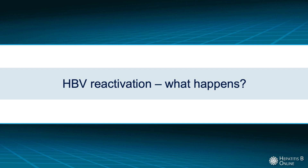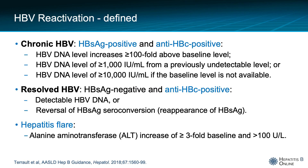So what happens in HPV reactivation? For this portion of the talk, I will be referring to hepatitis B serologic markers. Please review the mini-lecture on this topic on our HepB online site or our YouTube channel. HPV reactivation occurs primarily in two main groups of individuals: those with chronic hepatitis B infection who are surface antigen as well as core antibody positive. In these individuals, a 2-log or 100-fold rise in HPV viral level above baseline, or a viral level that rises 1,000 IU per mL or greater from a previously undetectable level, or an HPV viral level of 10,000 IU per mL in someone without prior testing counts as HPV reactivation.